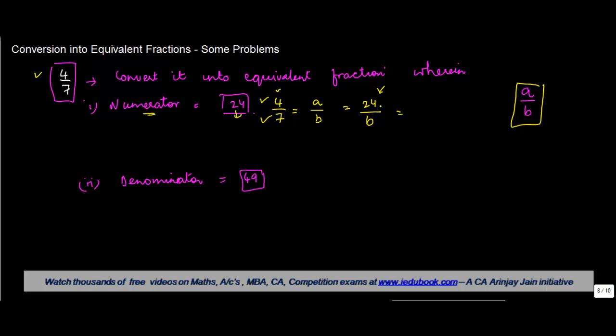Now if you see, 24 divided by 4 gives you 6. So we can also write 24 as 4 into 6, upon b.